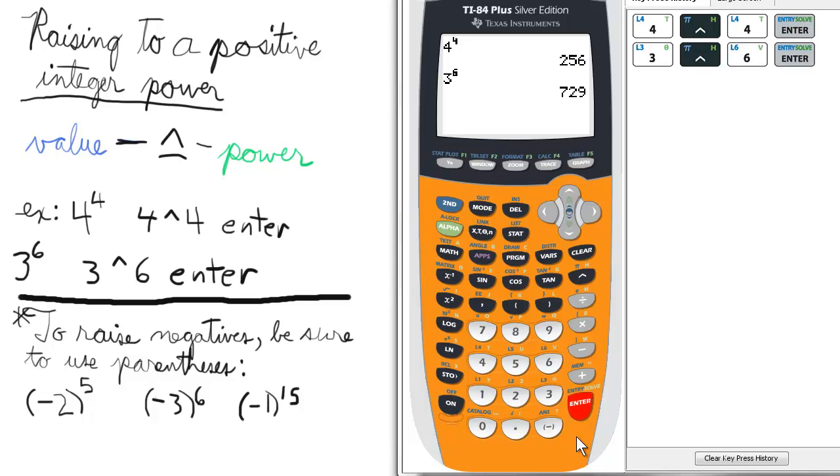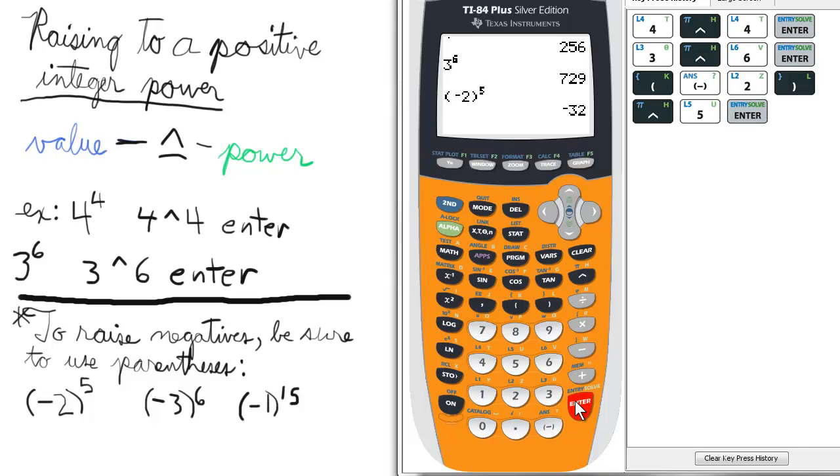if we're raising negatives to a positive integer power, we need to be sure to enclose in parentheses. So, open parentheses, negative 2, close parentheses, raised to the fifth, equals negative 32.